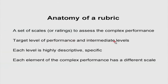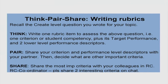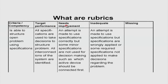The rubric has target levels of performance and intermediate levels. Each level is highly descriptive and specific — you can put examples. Each element of the complex performance has a different scale, meaning there are multiple rows to the rubric. At this point, take a few minutes to write your own rubric. Take the question you wrote at the beginning of the session. First do the think phase separately and write a single rubric item to assess that question. Writing a rubric item means writing the competency, the target performance, and all the performance levels — this entire table for one row.